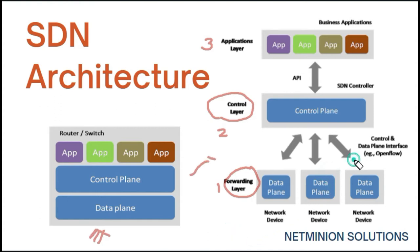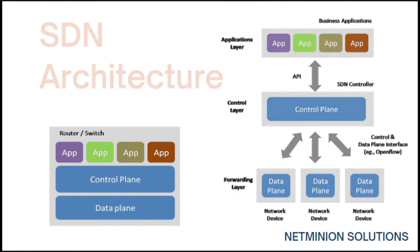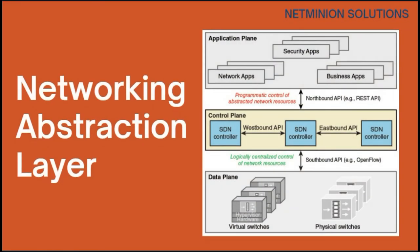SDN transforms networks from a tightly coupled architecture to a distributed one. Instead of all layers on a single device, it enables the network to be intelligently and centrally controlled or programmed using software applications. This helps operators manage the entire network consistently in a centrally controlled manner, regardless of the underlying network technology, through software applications using open APIs. Two key terms in this context are southbound API and northbound API.